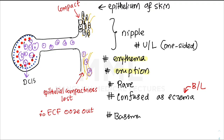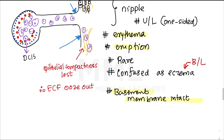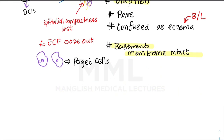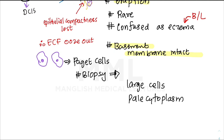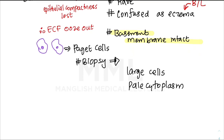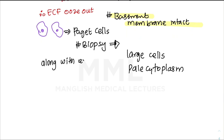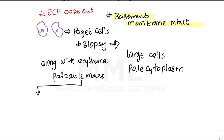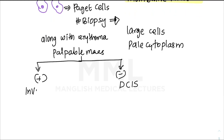An important point: the basement membrane is intact in Paget's disease of the nipple. On biopsy, you get Paget's cells — very large cells with pale cytoplasm. If a patient presents with erythema along with a palpable mass, it is mostly invasive carcinoma. If there is no palpable mass, it is mostly a DCIS condition.